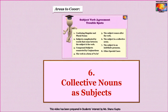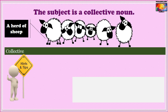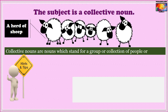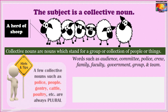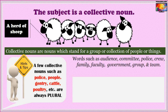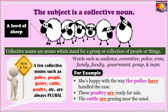Our sixth section is that of collective nouns as subjects. Collective nouns denote a group or collection of people or things — words such as 'audience,' 'committee,' 'police,' 'crew,' 'family,' 'faculty,' 'government,' 'group,' and 'team.' A few collective nouns such as 'police,' 'people,' 'gentry,' 'cattle,' 'poultry' are always considered plural and take plural verbs. For example: 'She is happy with the way the police have handled the case.' 'These poultry are ready for sale.' 'The cattle are grazing near the canal.'